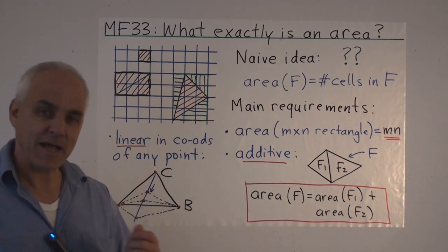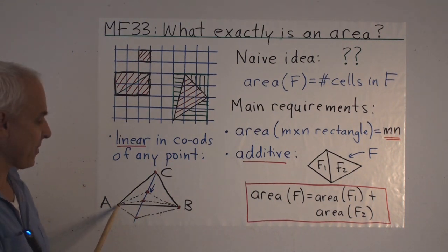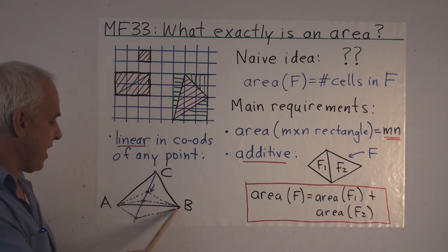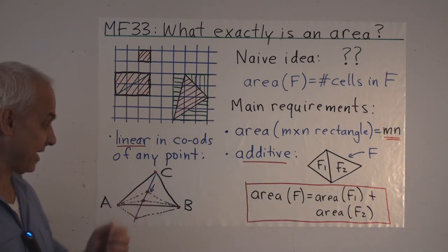And a more subtle requirement that works really well, we'll see later on, is a notion of linearity. What that means is that if we have a triangle ABC, and we keep A and B fixed, and just vary C. Suppose we move C along a line, linearly, so with constant speed.